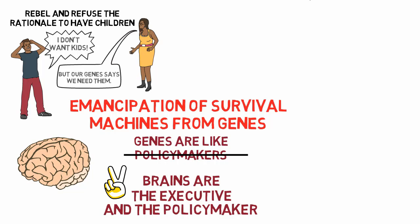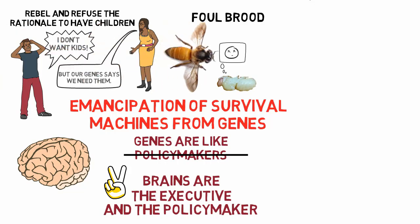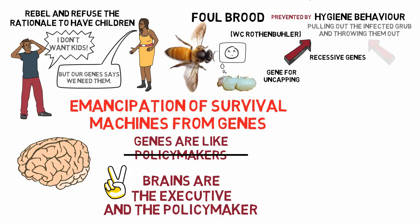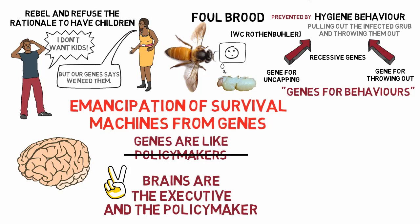Animal behavior is under the control of genes, but only indirectly, and can still be very powerful. An example is foul brood, an infectious disease of honeybee grubs. Breeds that practice hygiene behavior — pulling out infected grubs and throwing them out of the hive — can stamp out the epidemic. W.C. Rothenbuehler found that hygiene behavior is recessive and composed of two genes: one for uncapping the wax covering the grub, and another for throwing out the grub. This illustrates how genes cooperate in their effect on behavior; the throw-out gene is only helpful when accompanied by the uncapping gene.